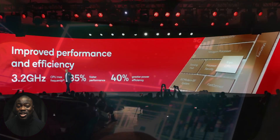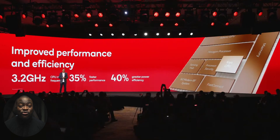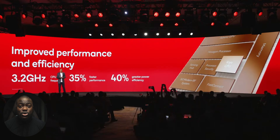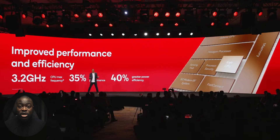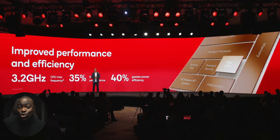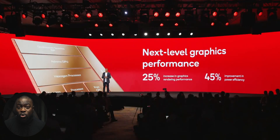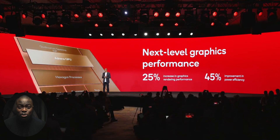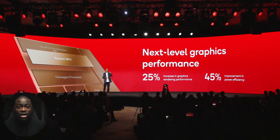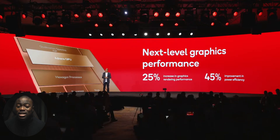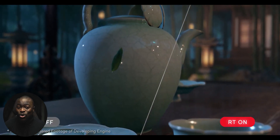Qualcomm are stating up to 35% better CPU performance with up to 40% better efficiency when it comes to power draw. The Adreno 740 GPU is set to have 25% faster performance with up to 25% better efficiency gains on power draw, offering features like hardware-based ray tracing, VRS, and Vulkan 1.3 support. The Snapdragon 8 Gen 2 officially supports Unreal Engine 5, which might give it an edge in future mobile games with better support for current and next-gen graphics. Again, this is against the previous 8 Gen 1 and not the 8 Plus Gen 1.